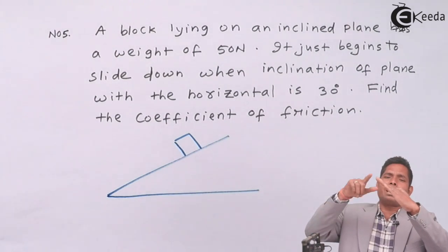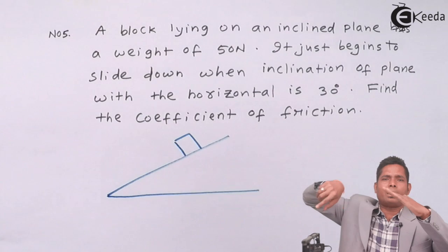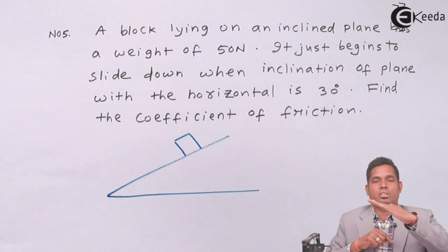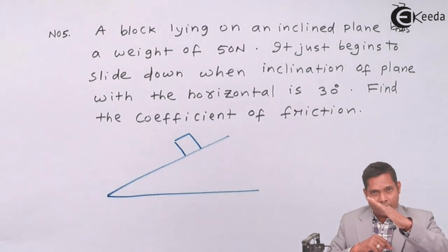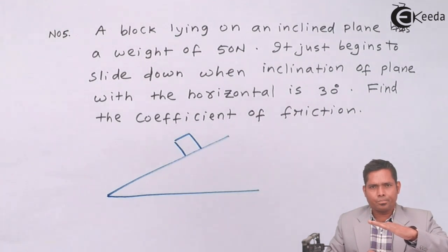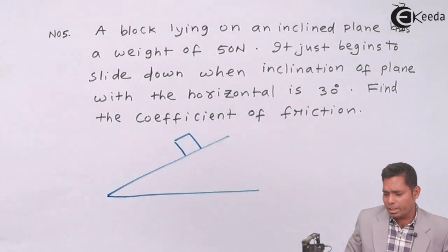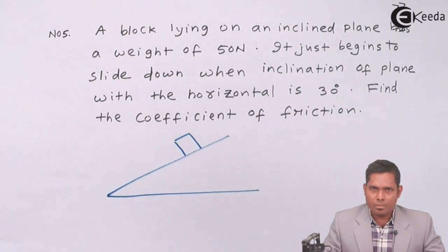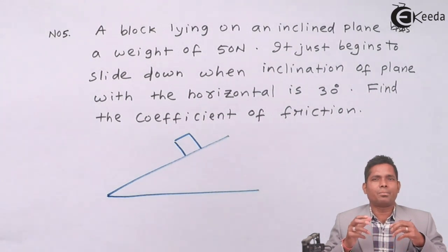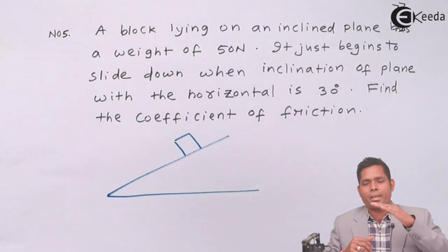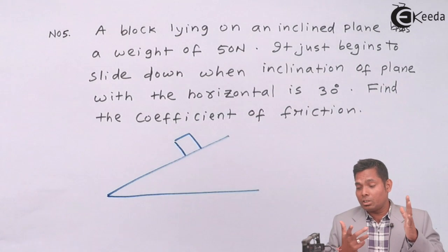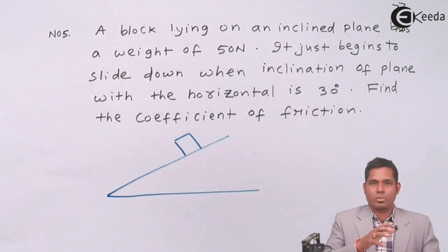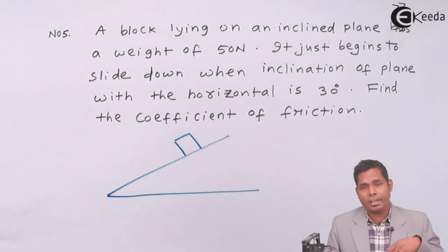That means if the inclined plane angle is at 30 degrees, the block starts moving down. If I decrease the angle below 30 degrees, it will not slide. So 30 degrees is the minimum angle of motion. If I increase the angle greater than 30 degrees it will also start moving. This 30 degrees is called the angle of repose.